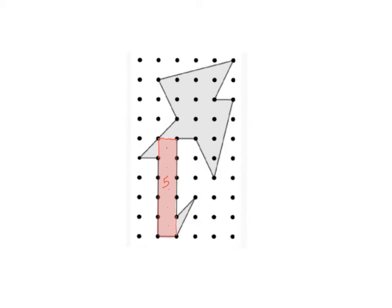I'm going to box this part off right here. There's a big rectangle right there. I'll go ahead and shade that blue and then count how many square units this one is — I see one, two, three, four, five, six. So this will be six square units.